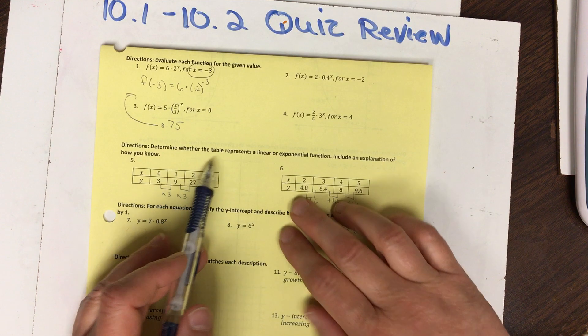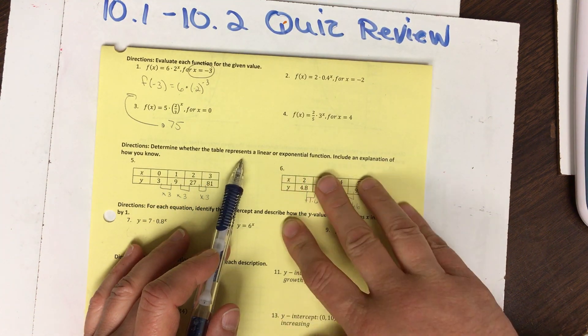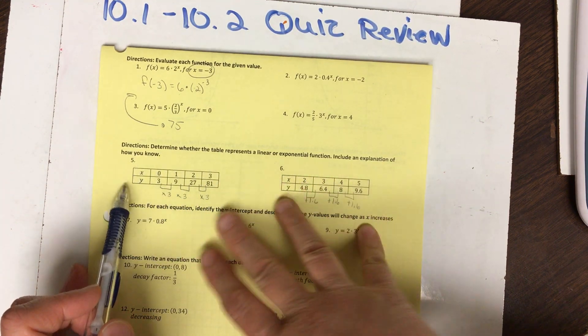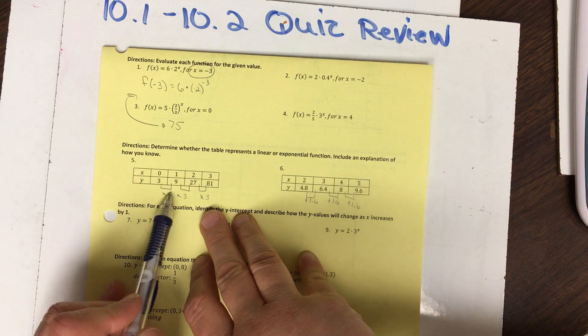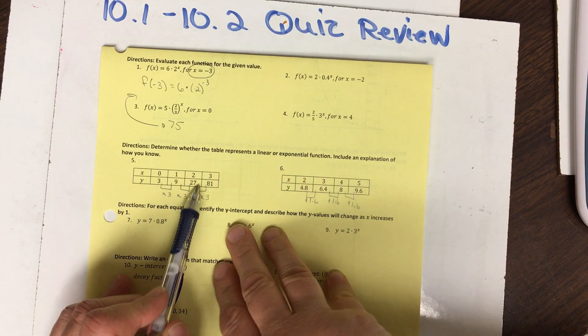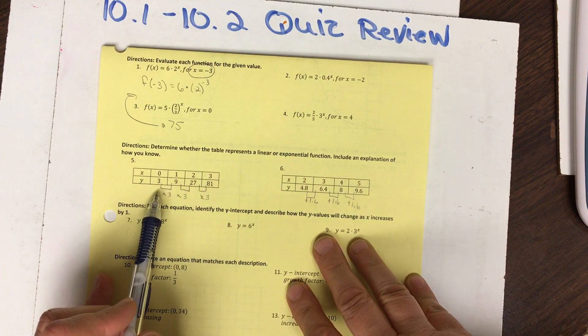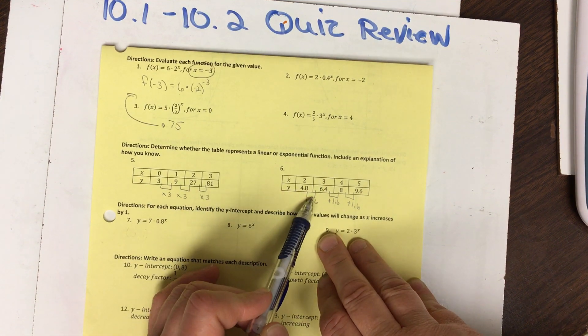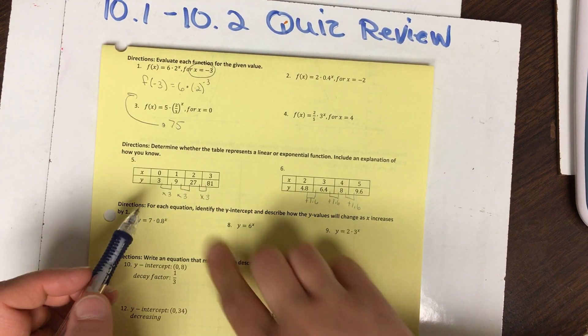Determine whether the table represents a linear or exponential function. Include an explanation of how you know. Alright, so I went and I figured out what the difference is, what the steps are, the intervals are, how we got here between the different ones.